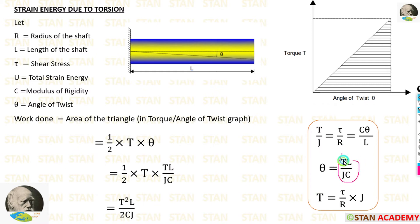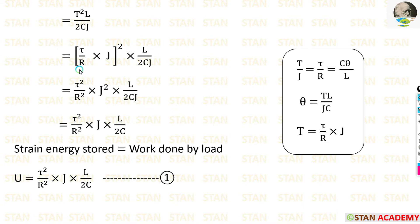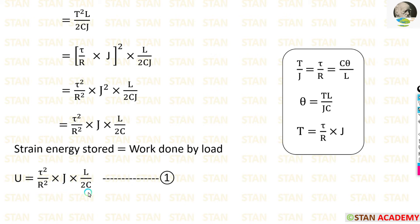First, applying T·l by J·c instead of theta, and T into T gives T squared. So we get T squared·l by 2·c·J. Then applying tau by r into J instead of T, we get tau squared by r squared into J squared. There is already one J, so we can cancel. Finally, we get tau squared by r squared into J into l by 2c. Since strain energy stored is equal to work done by load, u is equal to tau squared by r squared into J into l by 2c. Let us keep this as equation number 1.